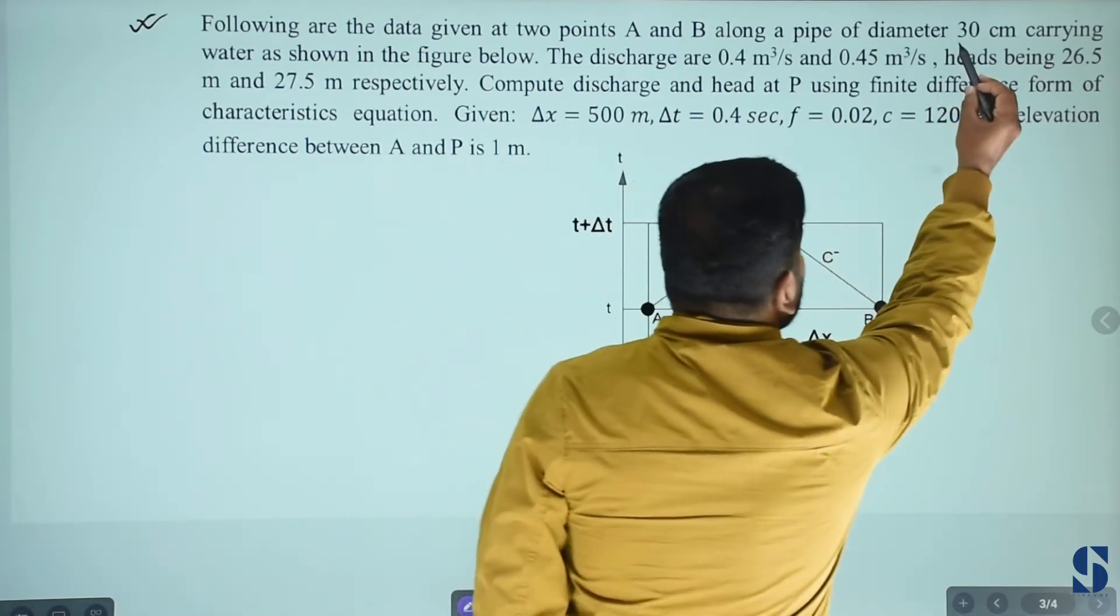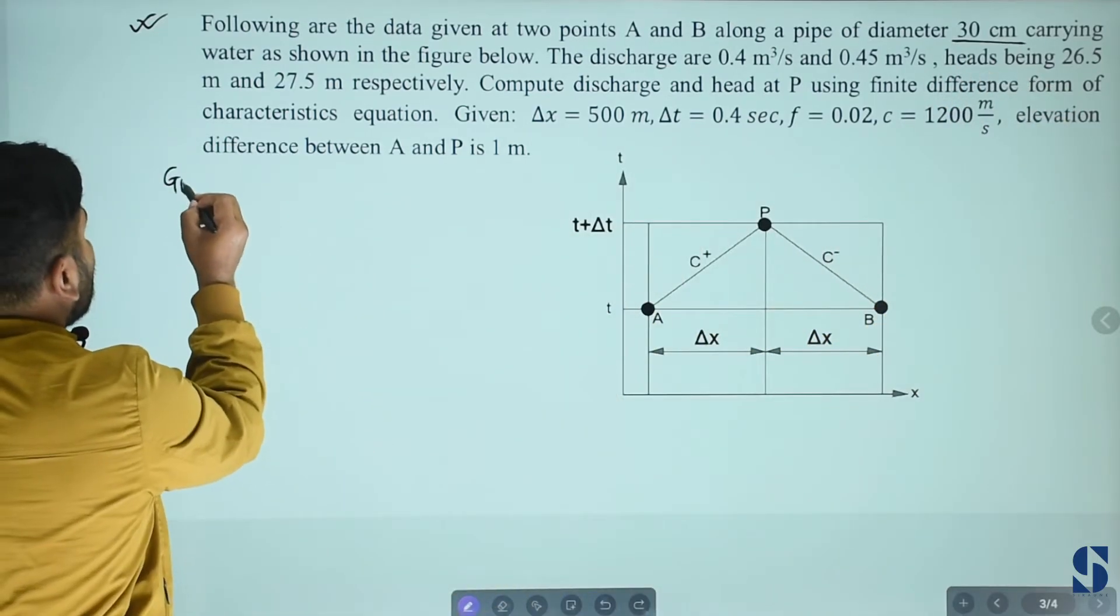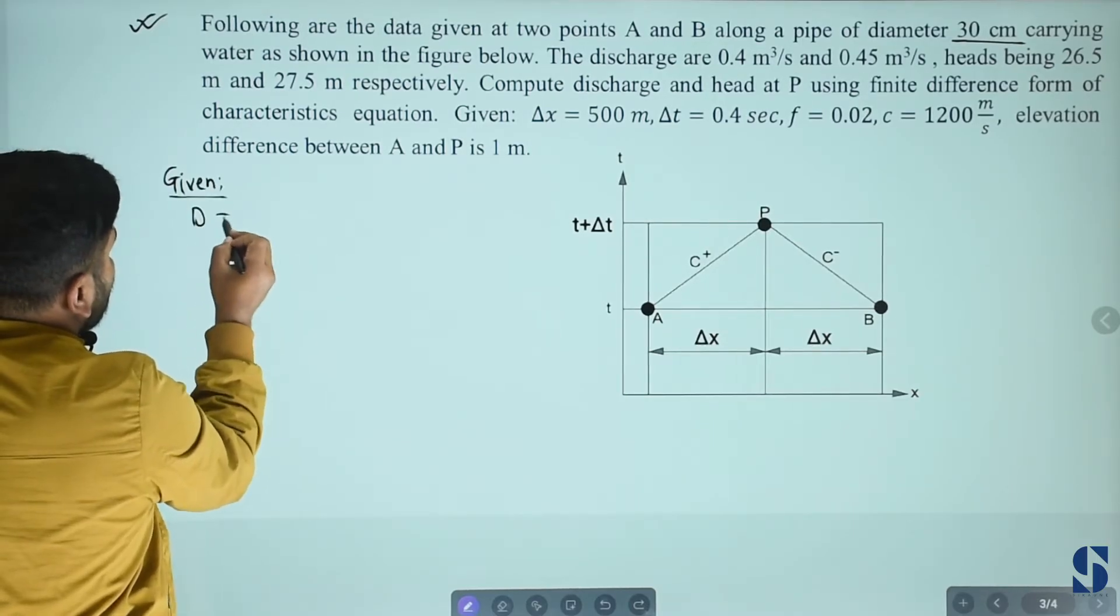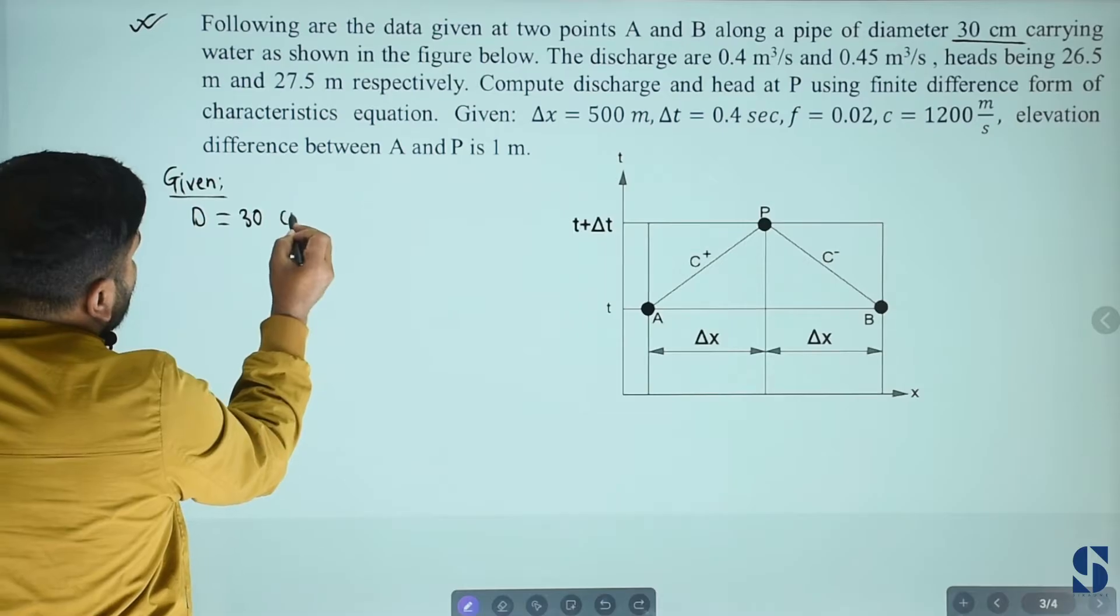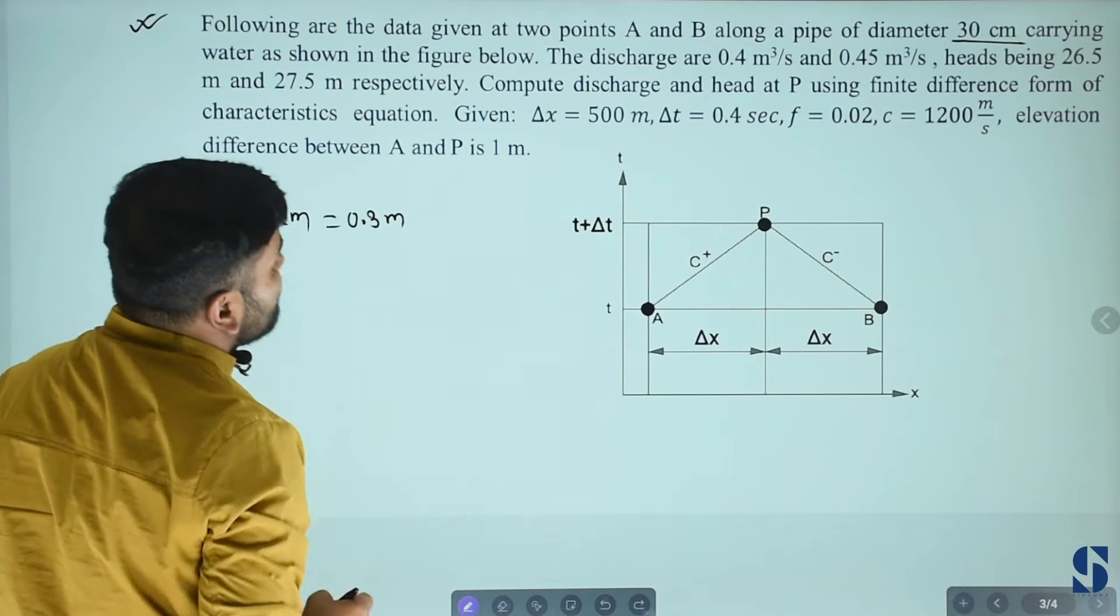Diameter of pipe is 30 cm. Given diameter of pipe equals to 30 cm, this means 0.3 meter.